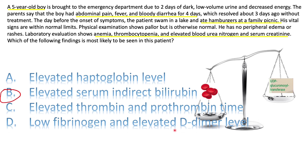Elevated D-dimer would be seen if this was DIC or if coagulation factors were being used up — but this is just a platelet clot. In HUS, Shiga toxin escapes from the intestine to the blood and damages capillary endothelial cells, forming platelet clots and using up platelets, leading to thrombocytopenia. Those platelet clots shear red blood cells, causing hemolytic anemia with schistocytes. Because the glomerulus is also a capillary, it gets damaged, causing acute kidney injury.